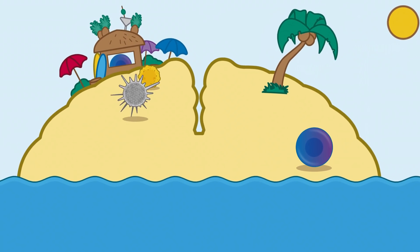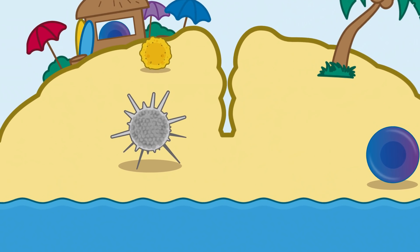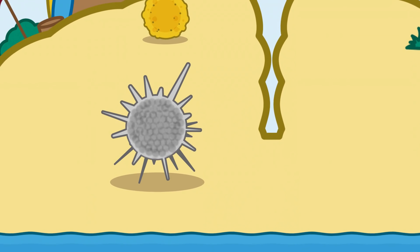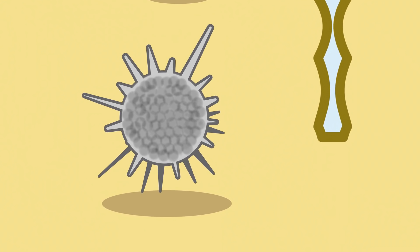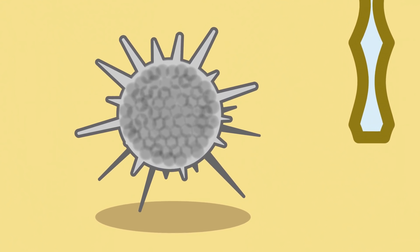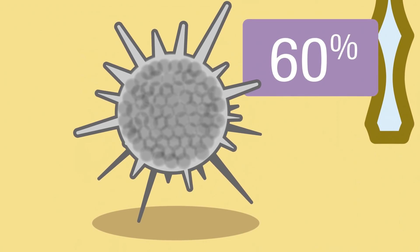Brain cancers can either originate in the brain or spread to the brain from other parts of the body. In a specific type of lung cancer called anaplastic lymphoma kinase mutation positive non-small cell lung cancer or ALK positive non-small cell lung cancer, as many as 60% of patients' tumours spread to the brain.